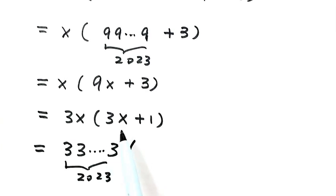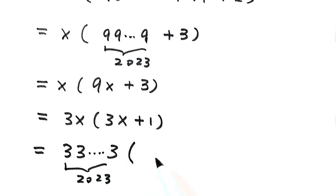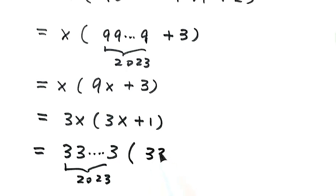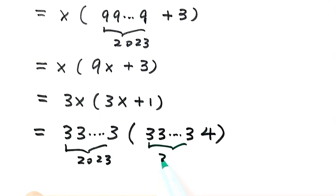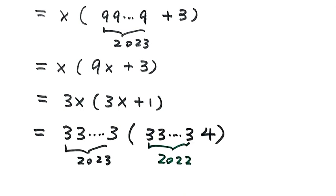So then the inside, so that will be 3 times X. So then plus 1, so it will be 333. Then the last digit plus 1. So then here is a 4. And how many 3s here? So then here there are 2022 threes. So then you see this number is one more than this one. So that's a product of two consecutive positive integers.